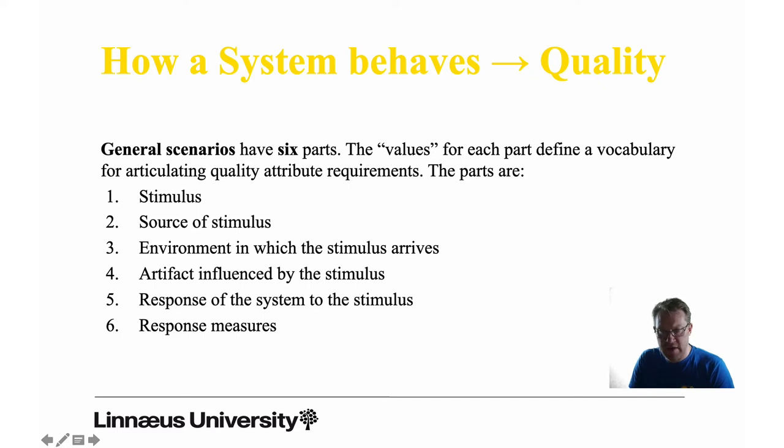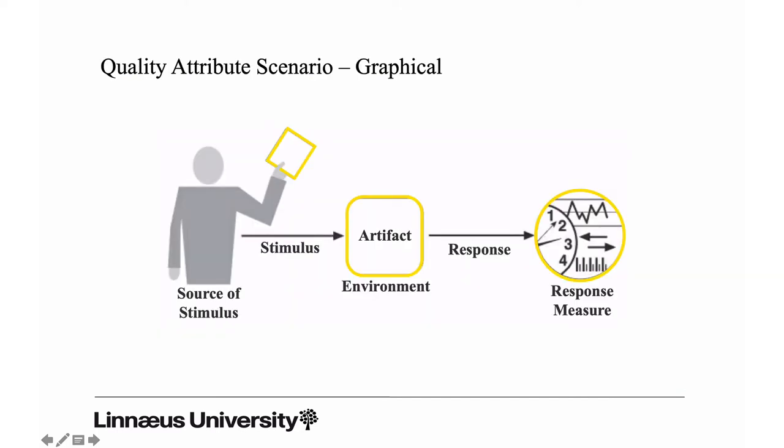Quite easy to explain this using a basic example. Here's a quality attribute scenario depicted as graphical elements. Here we have a source of the stimulus - this is a user. Over here we have a web shop, and this web shop is running in an environment, and that environment is characterized by that it's normal operation.